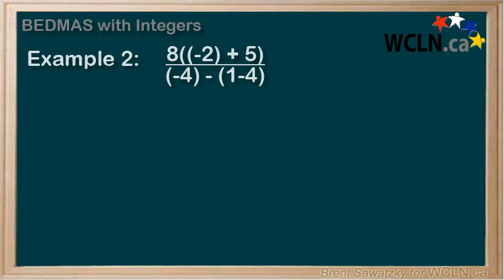Example 2: 8 times in brackets negative 2 plus 5, and on the bottom negative 4 minus in brackets 1 minus 4. Again lots of brackets in this one. Some have operations while others are just to keep track of negative signs. Note that we also have to treat the division as if the top and bottom were in brackets. So where to start? Let's do a mini BEDMAS on the top and the bottom treating them individually on each step. If you find this too confusing you can of course do one at a time, but let's see if you can follow this.